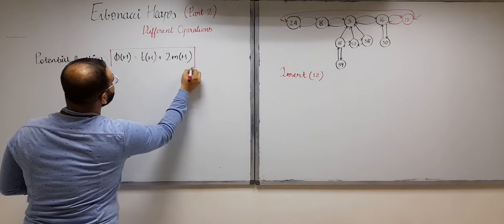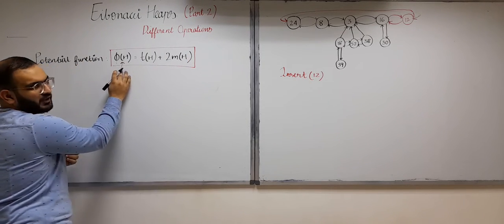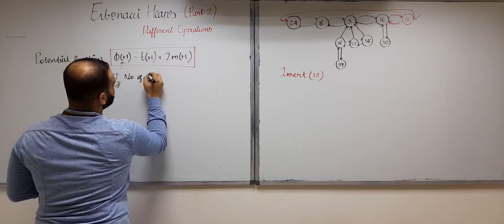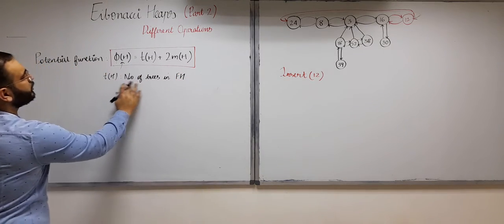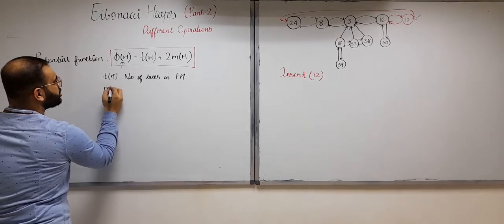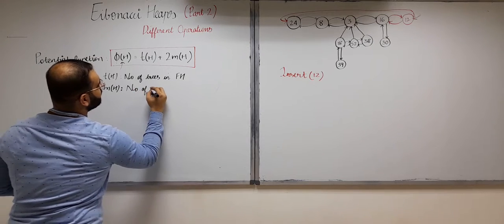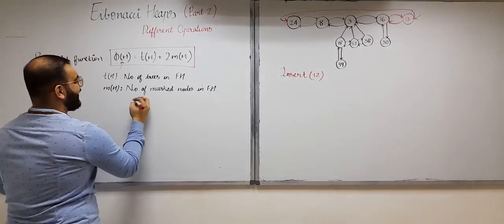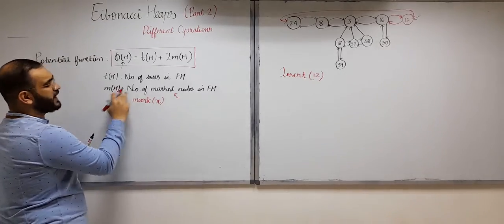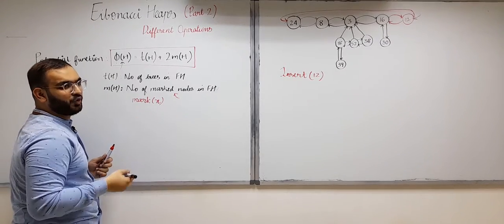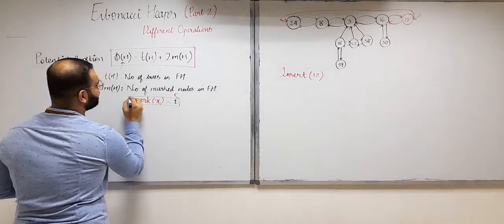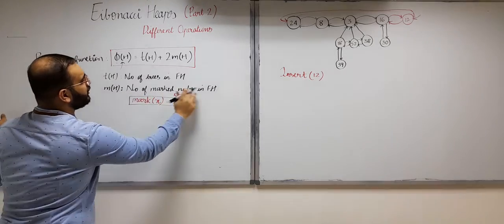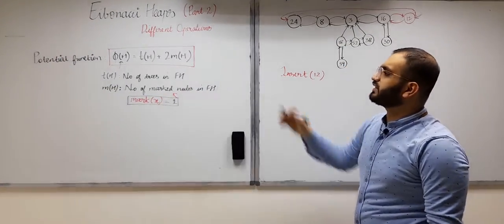For Fibonacci heaps the potential function is: Φ(H) = t(H) + 2·m(H), where t(H) is the number of trees in the Fibonacci heap, and m(H) is the number of marked nodes in the Fibonacci heap. Every node has a mark field, and m(H) equals the total number of nodes for which that mark value is 1. So t(H) = number of trees in H, and m(H) = number of marked nodes in H. Now let us calculate the time complexity for the insert operation.